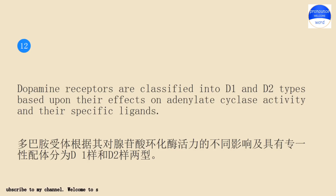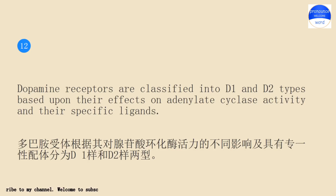Dopamine receptors are classified into D1 and D2 types based upon their effects on adenylate cyclase activity and their specific ligands.